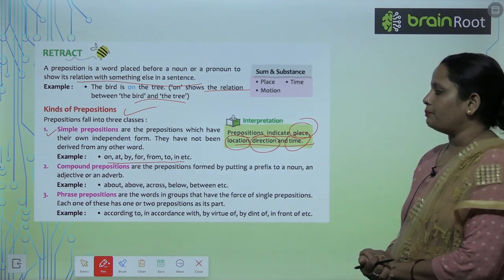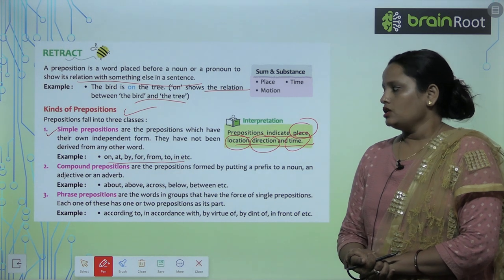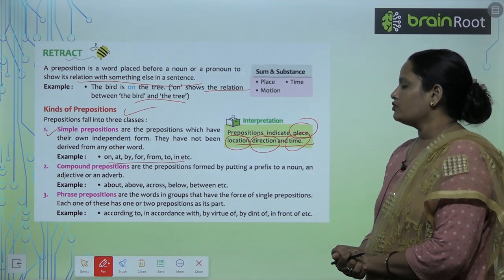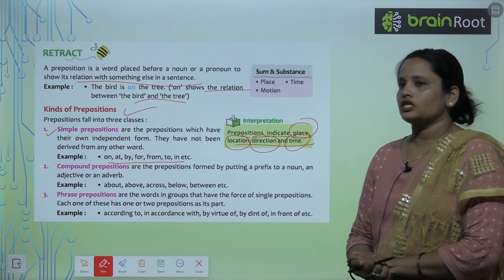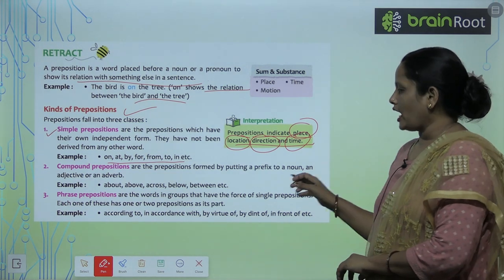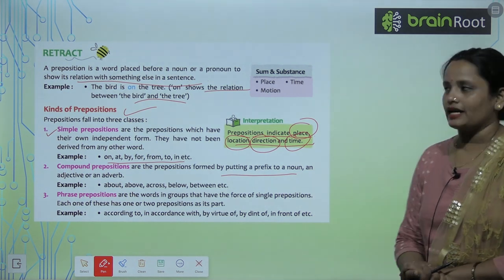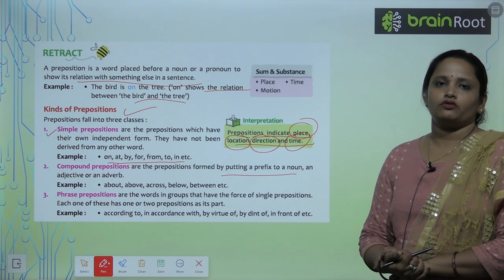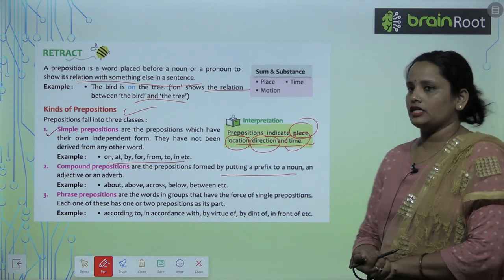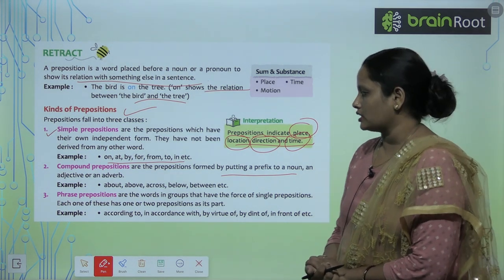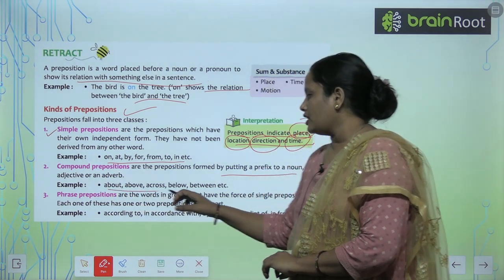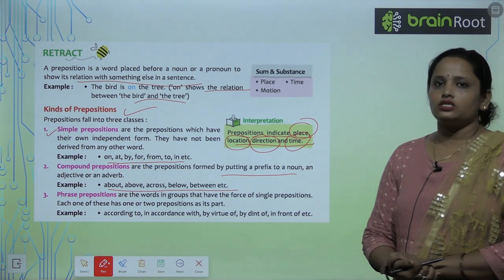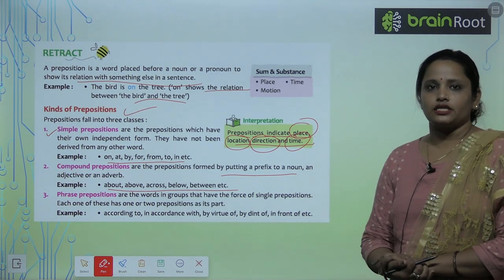The second kind is compound prepositions. These are the prepositions formed by putting a prefix to a noun — jo kisi bhi noun mein prefix laga ke banaye jaate hain — an adjective, or an adverb. Examples are: above, about, across, below, between, etc.